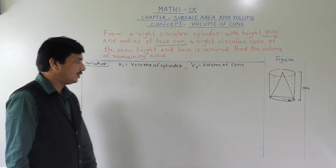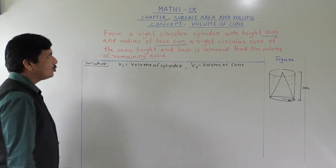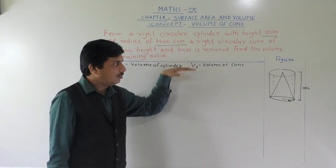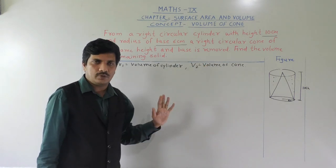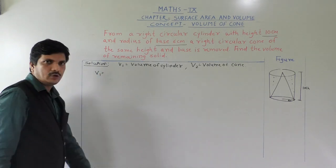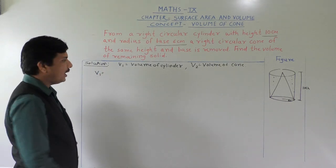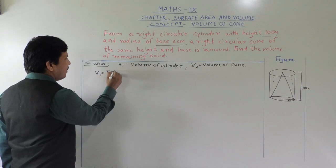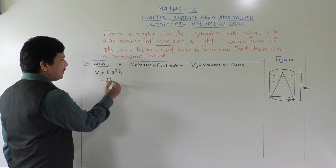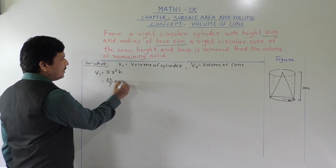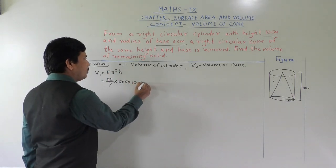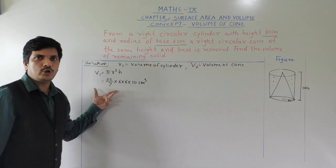First we will find out V1. Height and radius is the same for both cylinder and cone. V1 equals volume of cylinder. Volume of cylinder is π R² H. We put the value: 22/7 multiplied by radius 6 multiplied by 6 into height 10, in centimeter cube. This is the volume of cylinder.